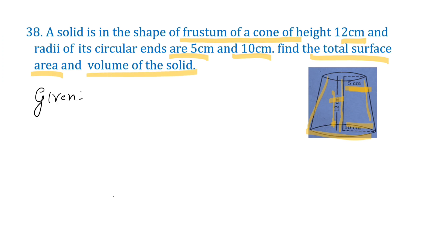Given: height of the frustum of cone is 12 centimeters, r1 is 5 centimeters, r2 is 10 centimeters. To find: TSA and volume.